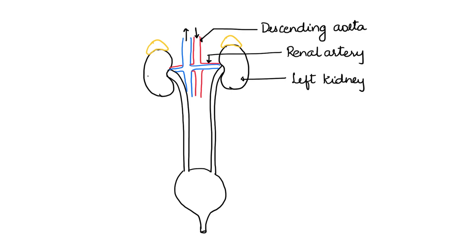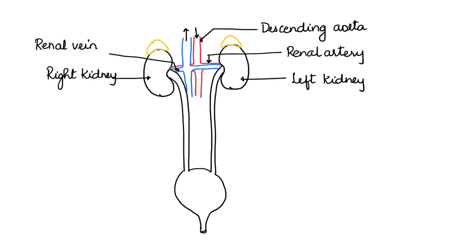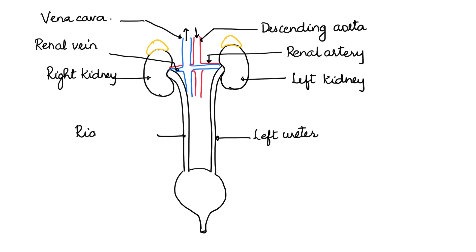This is the renal artery. The bean-shaped structure is the left kidney, and the other side we have the right kidney. The vessel in blue from the kidney is the renal vein, which joins the vena cava that sends the blood back to the heart. The tubes arising from the kidneys are the ureters, so here we label the left and the right ureter.